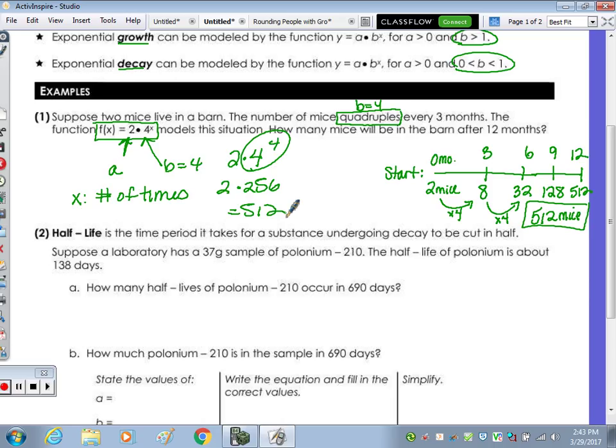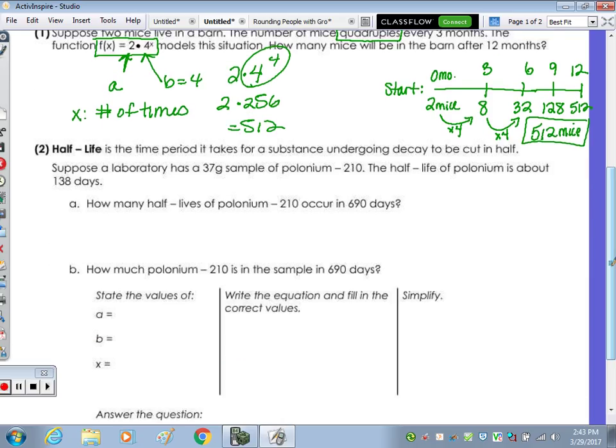So half-life. Half-life is the time period it takes for a substance undergoing decay to be cut in half. Suppose a laboratory has 37 grams, so that's your sample size, that's our starting value. We have a sample of polonium-210. The 210 is not a number we're going to use in our calculation, that's the name.